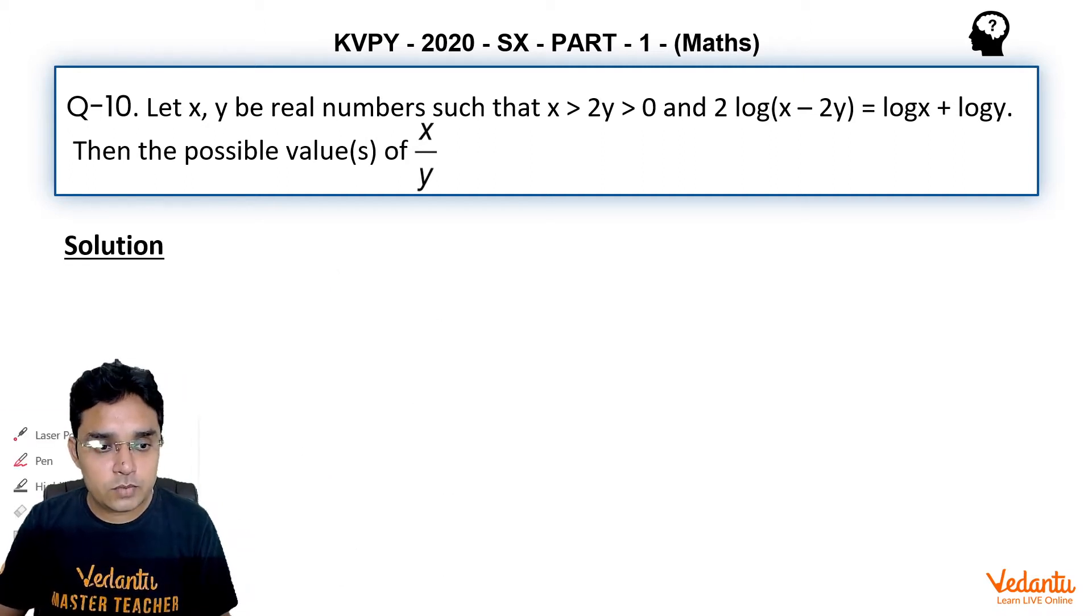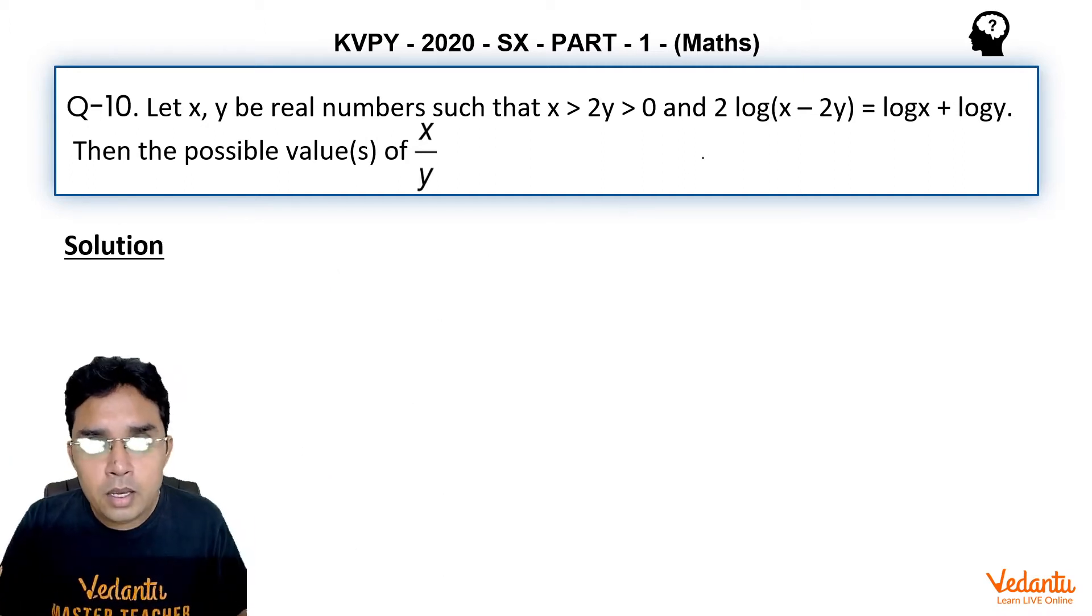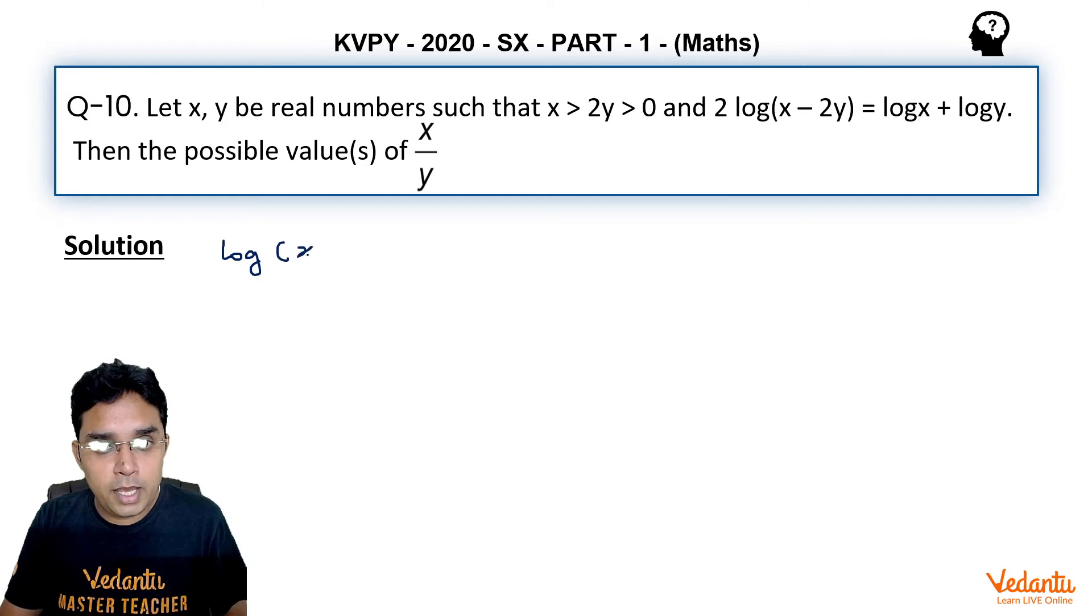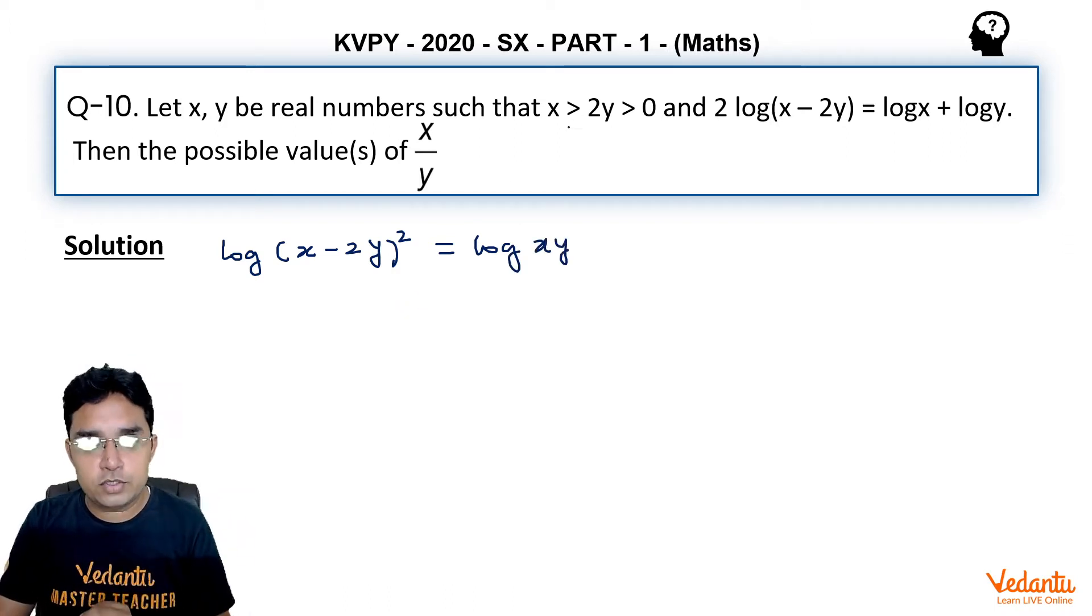To solve this question, we can use the properties of logarithms. On the left hand side, I can write this as log(x - 2y)^2, and on the right hand side, it is log(xy). Every quantity involved is positive: x - 2y is positive.